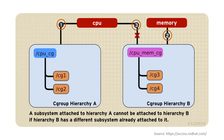Any single controller, such as CPU, cannot be attached to more than one hierarchy if one of those hierarchies has a different controller attached to it already. This means that once the cgroup hierarchy CPU_CG has been attached to the CPU controller, and CPU_MEM_CG has been attached to the memory controller, the CPU controller cannot be attached to the hierarchy CPU_MEM_CG. The numbered bullets represent a time sequence in which the subsystems are attached.